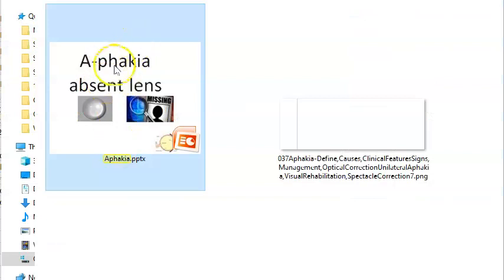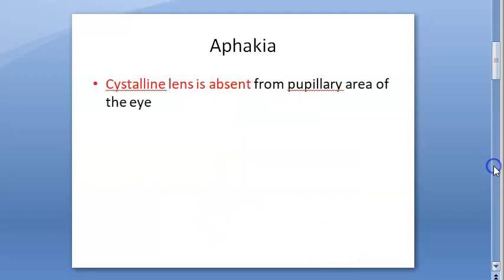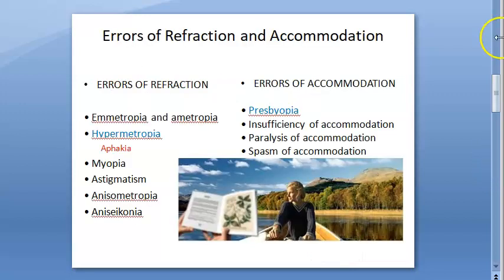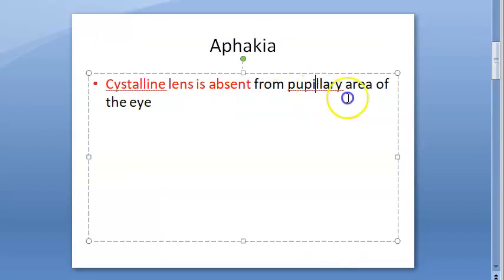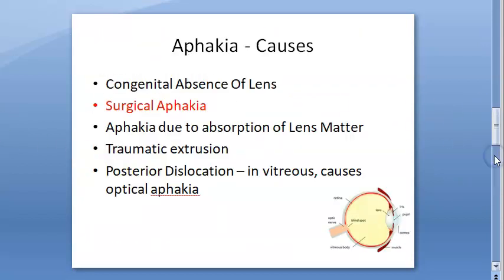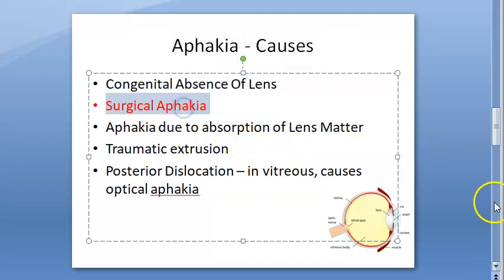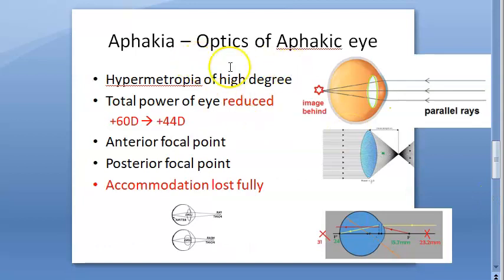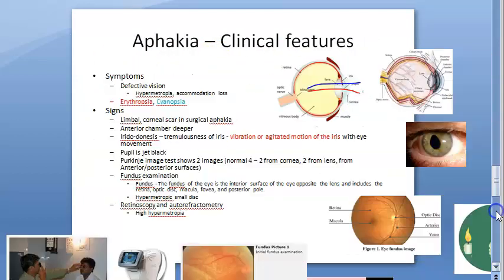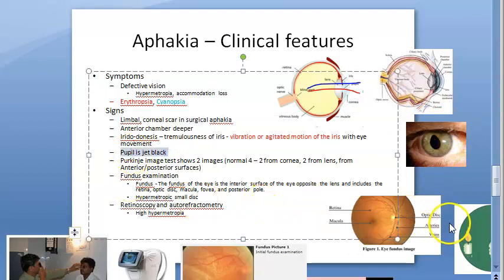Aphakia means absent lens. The crystalline lens is absent from the pupillary area of the eye. It can be absent congenitally or surgically removed because of cataract. This causes hypermetropia. These people will have a jet black pupil.